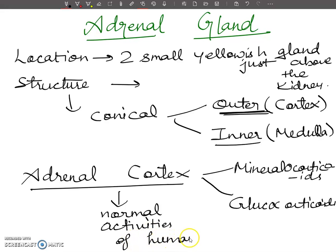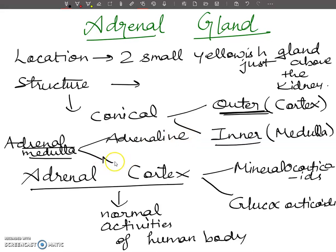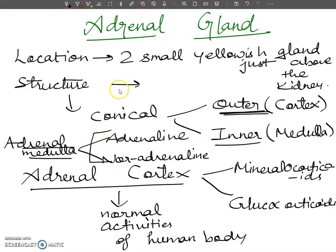Now, regarding the adrenal medulla — it also secretes two hormones. These hormones are called stress hormones or emergency hormones. At the time of stress or an emergency condition, they are secreted from the adrenal medulla and allow us to respond to emergency situations.